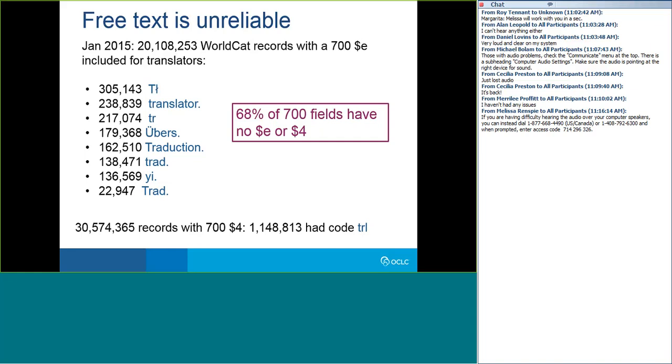In BibFrame displays we display translators where we can identify them. This is particularly nice when the 041 shows the original in Danish but also shows an intermediate translation — Danish translated into French and then into Vietnamese. Using the subfield $e terms is language dependent; this is a list of the most frequently used terms for translator in different languages, with variations like 'traduction' in French or its abbreviation 'trad.' The subfield $4 code TRL is language independent, and we can generate appropriate labels according to the user's language preference. Unfortunately, most 700 fields in WorldCat — 68% — have neither a subfield $e nor a subfield $4. For further examples, I'll turn it back to Dean, starting with sound recordings.